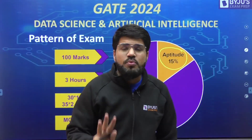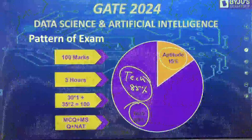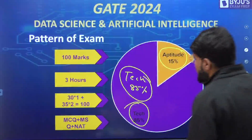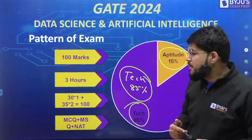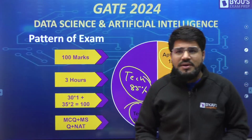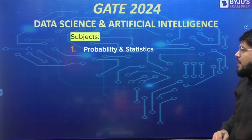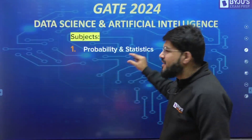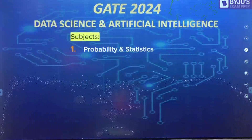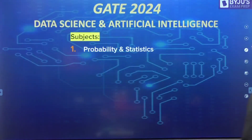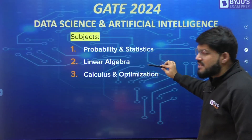The technical portion includes Engineering Mathematics with three subjects. Those three subjects are: Probability and Statistics, Linear Algebra, and Calculus and Optimization. Probability and Statistics is normally a chapter of Engineering Maths for other branches, but here it comes as an individual subject with very high weightage. These three are taken from Engineering Mathematics.